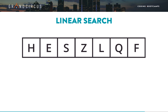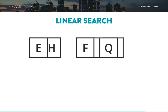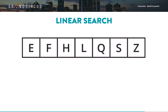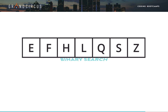But is there a more efficient algorithm? Well, not really — unless we change one thing. Let's put our array in sorted order. Now, can you think of a more efficient way to search for a letter? We can use an algorithm called binary search.